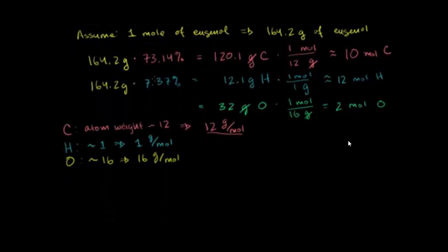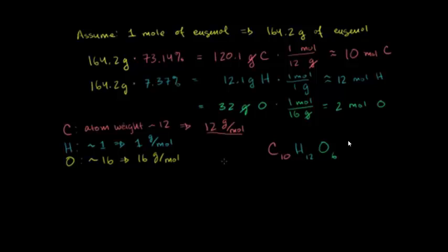We now have the ratio. For every molecule of Eugenol, we have 10 carbons, 12 hydrogens, and 2 oxygens. This is the molecular formula: C10H12O2.